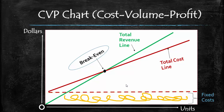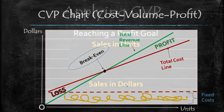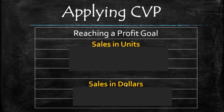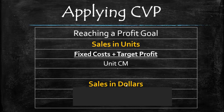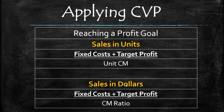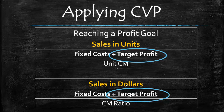On the CVP chart, profit occurs anywhere to the right of the break-even point, while a loss occurs to the left. Cost volume profit analysis can also determine how many units must be sold to achieve a target profit. A company adds its target profit to fixed costs — treating target profit essentially as a fixed cost — and divides by the contribution margin per unit. This is how management translates profit goals into sales goals for the sales team.